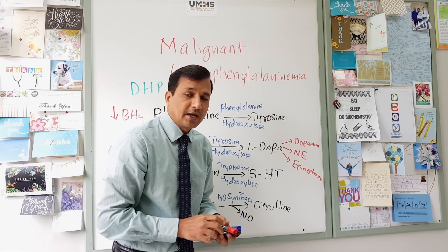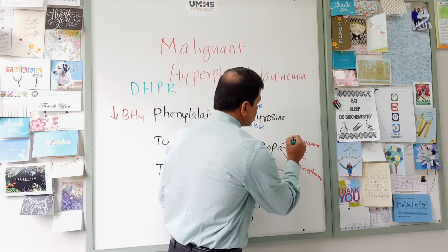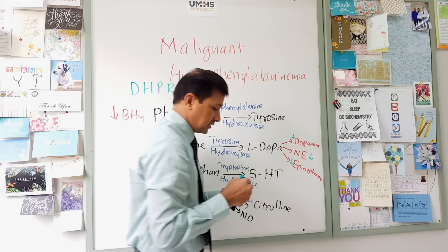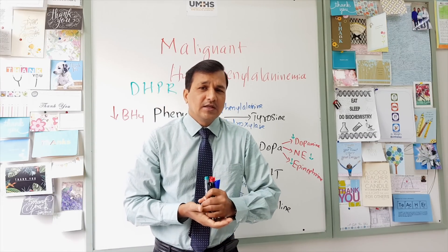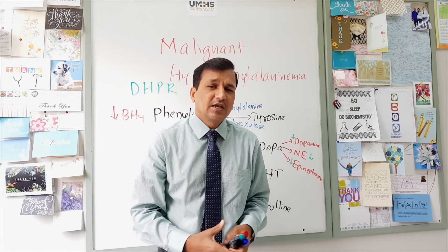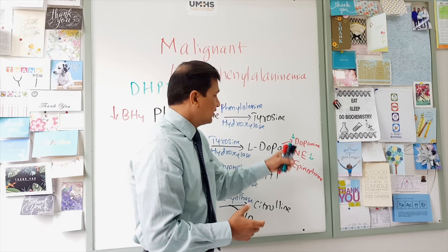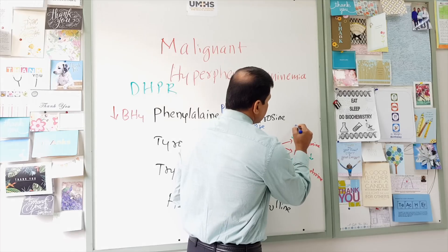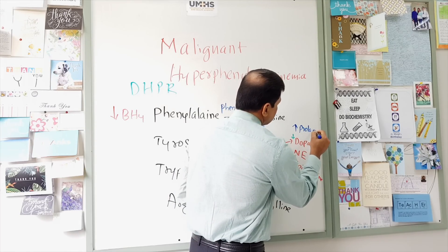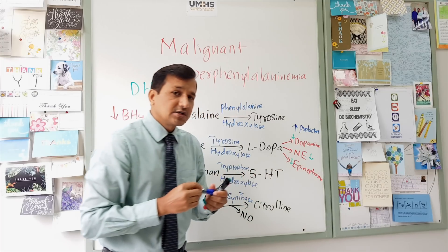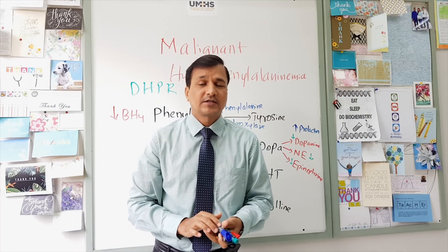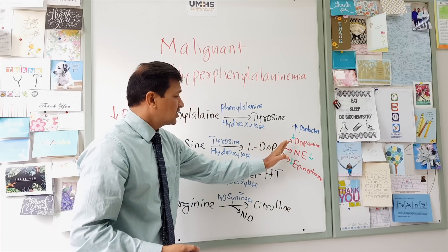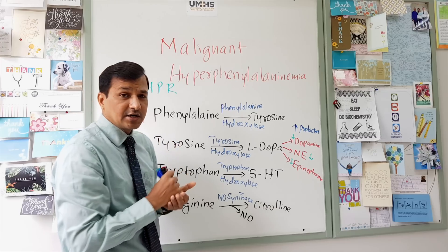Since dopamine, norepinephrine, and epinephrine all derive from L-DOPA, all three neurotransmitters are decreased in malignant hyperphenylalaninemia. Importantly, dopamine normally acts as an inhibitor of prolactin release in the nervous system; therefore, decreased dopamine leads to elevation of prolactin in the tissues and blood.